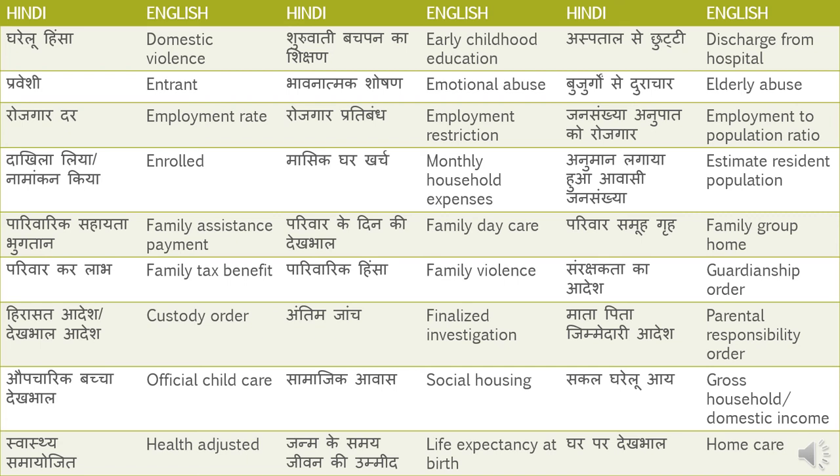Swasthiya samayojit — Health Adjusted. Swasthiya means health, samayojit means adjusted. Janam ke samay jeevan ki ummid — Life Expectancy at Birth.